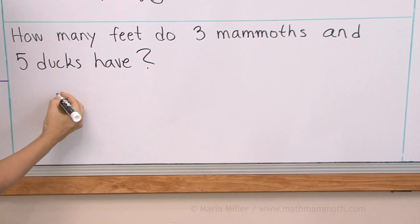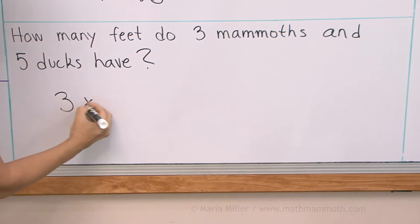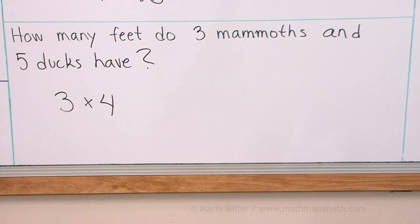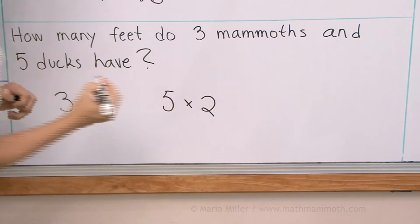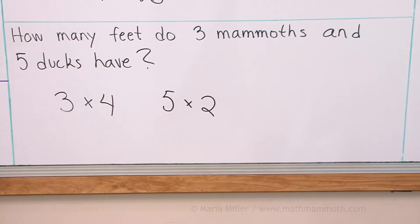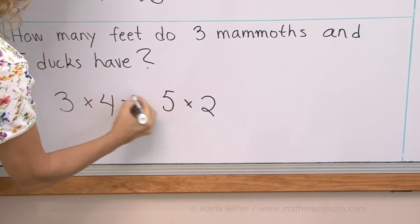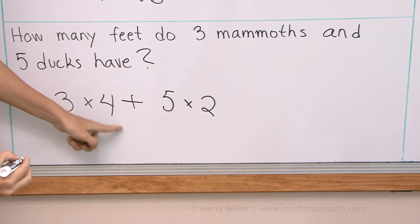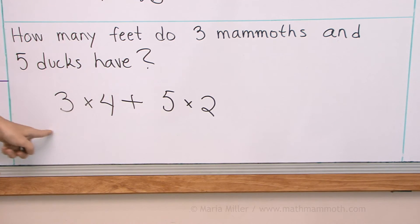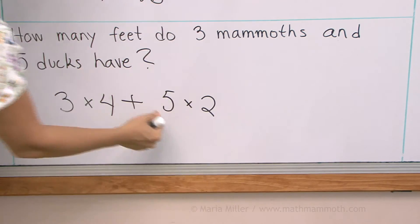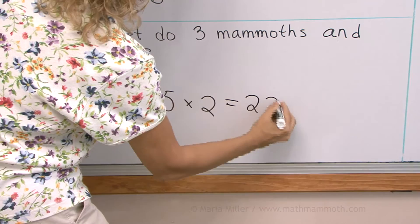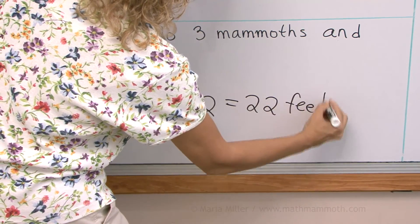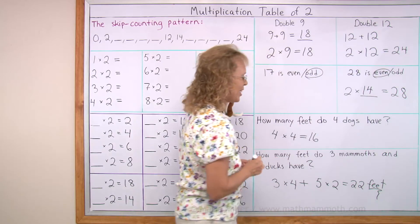Three mammoths, first of all, they have three times four legs. How about the five ducks? Those would have five times two feet or two legs. And then we add, right? So over here, three times four is 12. This one is 10. So 12 and 10, we get 22 feet. There. And all done with this lesson.